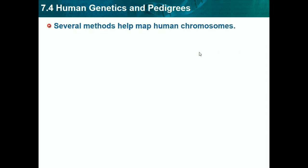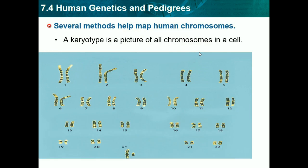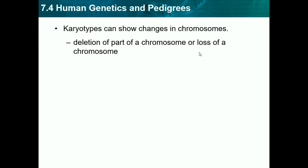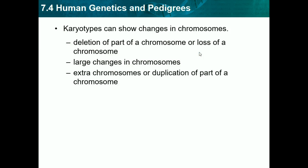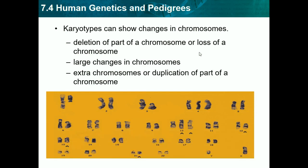Several methods can help map human chromosomes. A karyotype is a picture of all chromosomes in a cell — you've probably seen one without knowing what it was. This example shows all 23 pairs of chromosomes. A karyotype can show changes in chromosomes, such as deletion of part of a chromosome, loss of a chromosome, extra chromosomes, or duplication of parts of a chromosome, showing all the differences we can have.